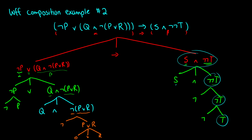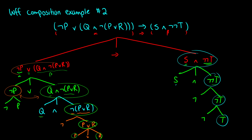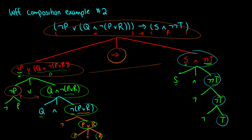Finally we're left with (P or R), which comes from P, OR, and R. Going in reverse: P and R join with OR to get (P or R); attach a negation to get not-(P or R); conjoin with Q to get (Q and not-(P or R)); attach a negation to P to get not-P; join with OR to get the big left-side formula; then use a conditional to join both well-formed formulas together to get the full formula at the top.